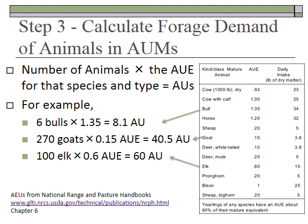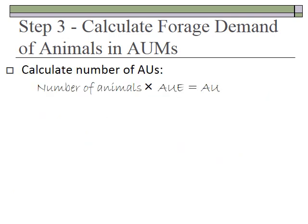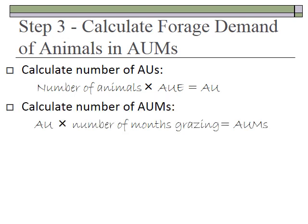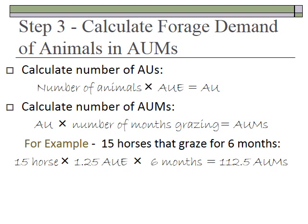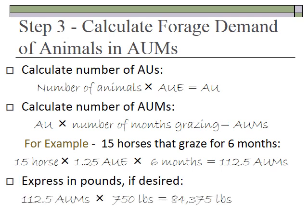Another example of calculating forage demand and converting to animal units: if you have 15 horses that grazed for 6 months, you calculate 15 times 1.25 (their animal unit equivalent) times 6 months, which equals 112.5 animal unit months. To express that in pounds, take 112.5 AUMs times 750 pounds per AUM, which gives 84,375 pounds of forage needed by the 15 horses.